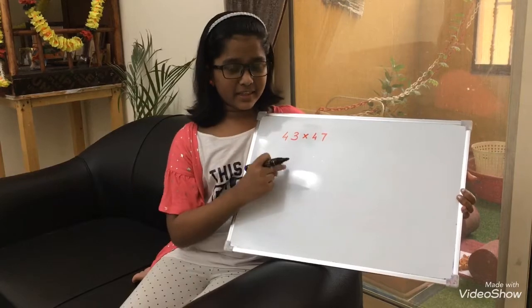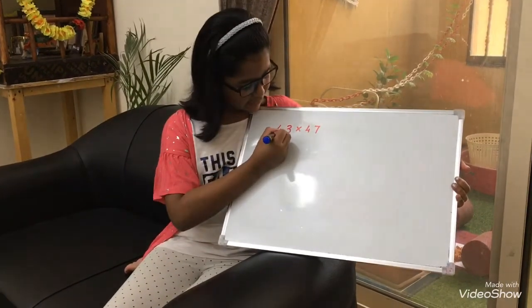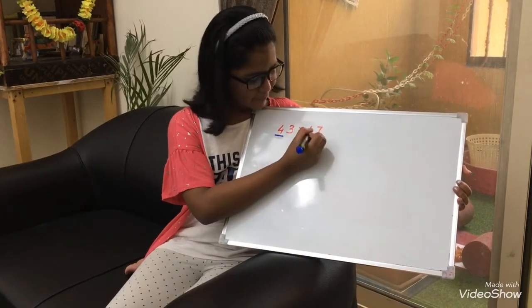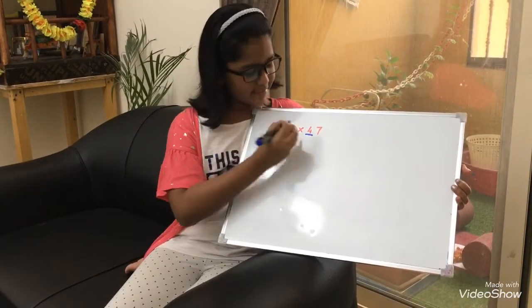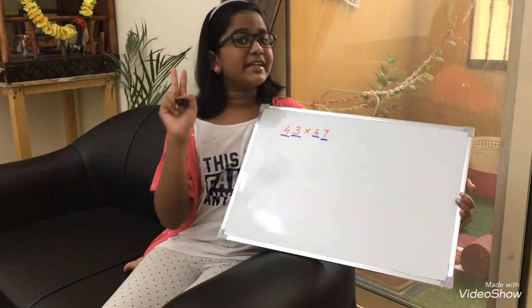In the before method, we were multiplying with two different digits. In this method, there are two rules. The first one is that the 10's place should be the same, and the 1's place, if we add it, should get 10.